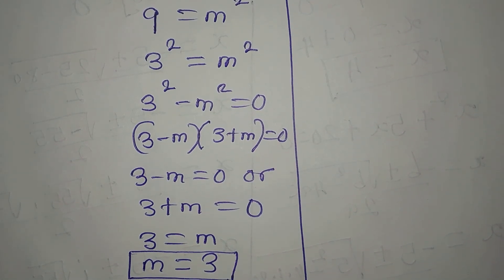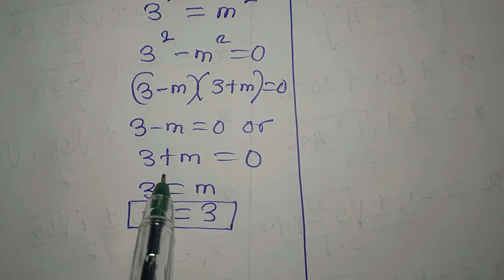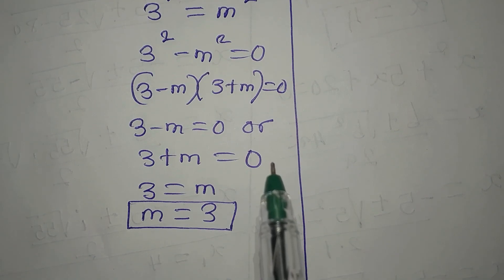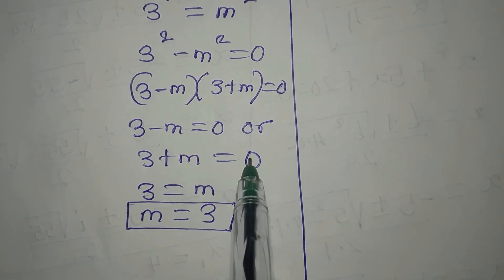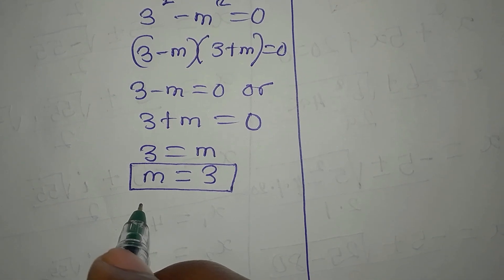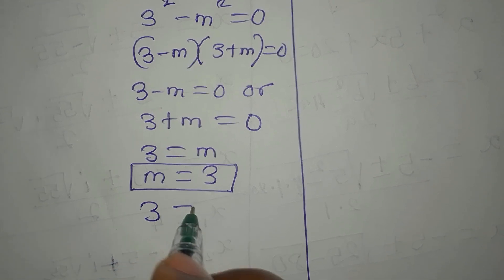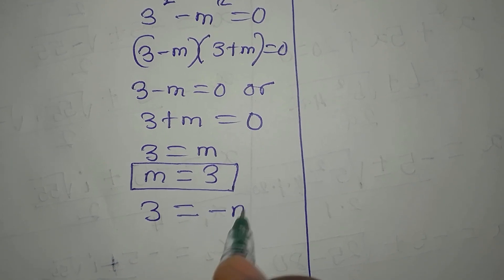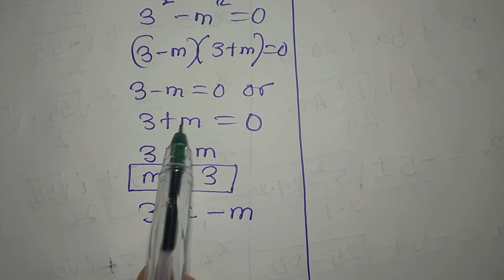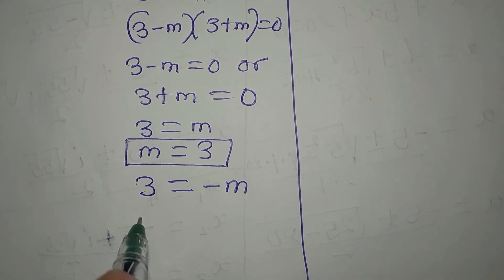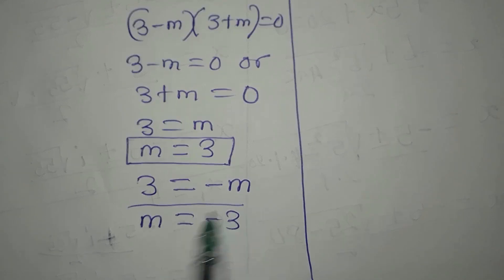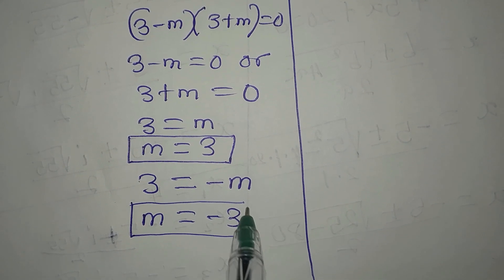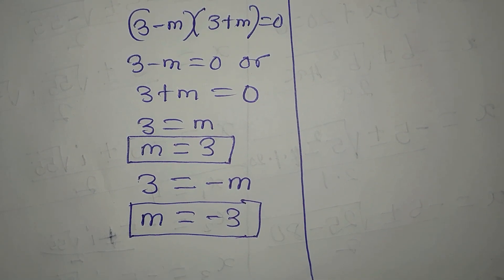Then taking the other factor, 3 plus m equals 0, so 3 equals negative m, which means m equals negative 3. So this is another solution to the equation.